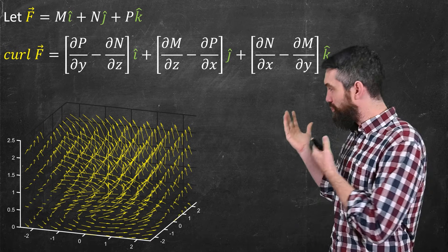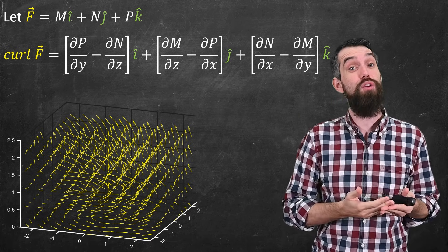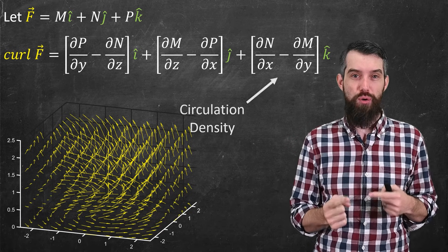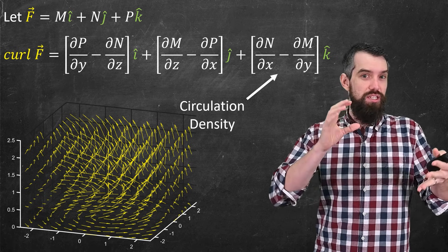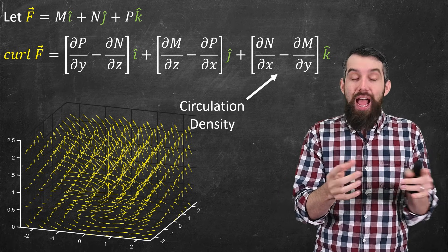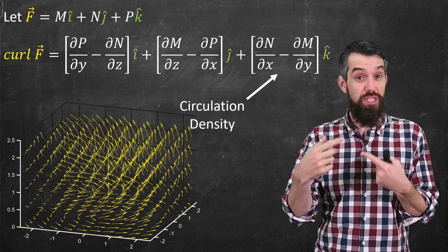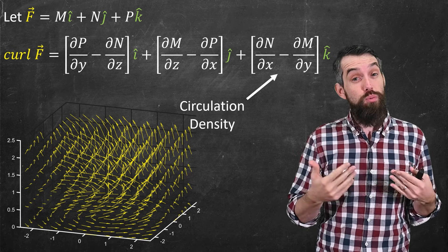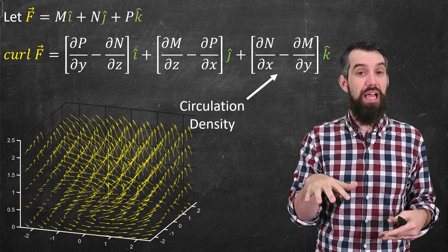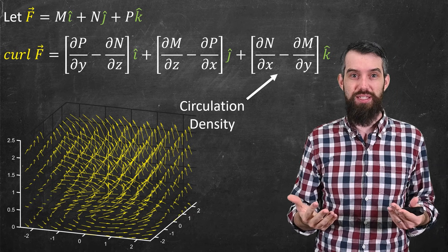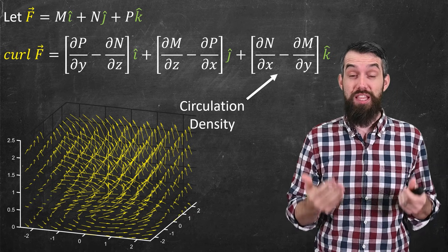Now, when you look at this expression, there might be some part of it that you have seen before, in particular, the third component. We saw this back when we were talking about circulation, circulation density, and the relationship between them that was expressed by Green's theorem. This was all something that we did in the two-dimensional case when we were talking about the plane. But now we're talking about the three-dimensional case.